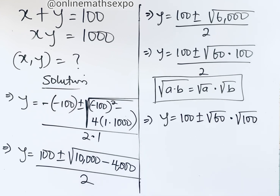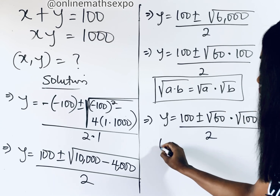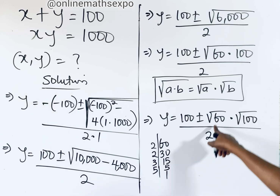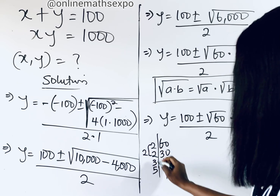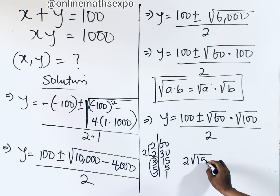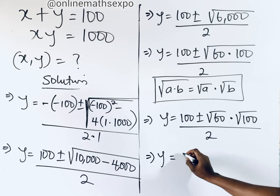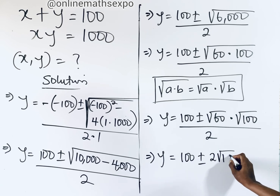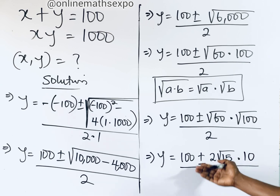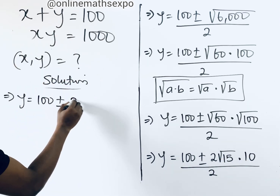Now we simplify the square root of 60. Factoring 60: 2 times 30, then 2 times 15, then 3 times 5. So 60 equals 2 squared times 15. Taking the perfect square out of the root gives us 2 root 15. And the square root of 100 is 10. So the square root of 6,000 simplifies to 2 root 15 times 10, which equals 20 root 15. So y equals 100 plus or minus 20 root 15, divided by 2.